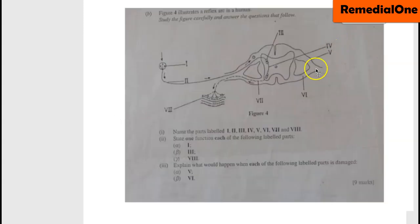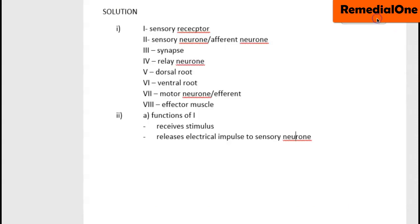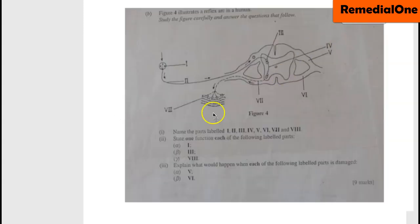The part labeled VI here is called ventral root. The part labeled VI is motor neuron, or you can say efferent neuron — either motor neuron or efferent neuron. Then the part labeled VII is called effector muscle, or you can simply say muscle.